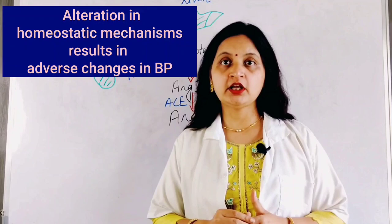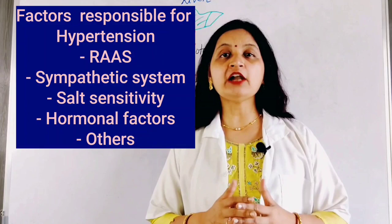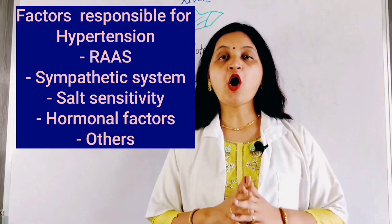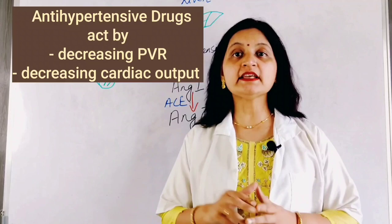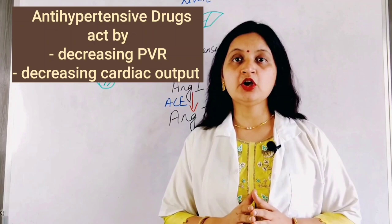Numerous factors including genetics, the renin-angiotensin-aldosterone system, sympathetic system, salt-sensitivity, and hormonal factors are mainly responsible for the pathogenesis of hypertension. So most of the antihypertensive agents act by decreasing the cardiac output and decreasing the peripheral vascular resistance. The antihypertensive agents are classified into 5 groups.